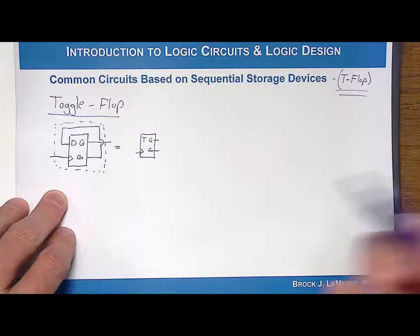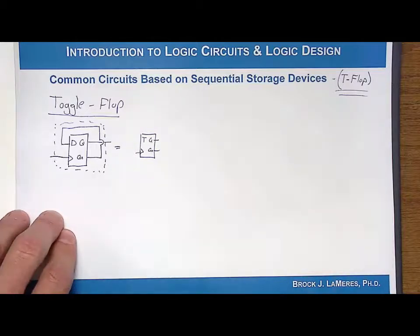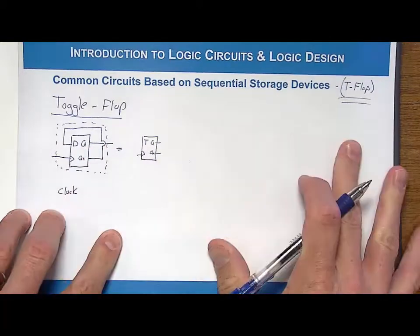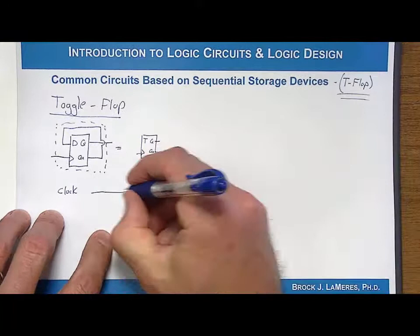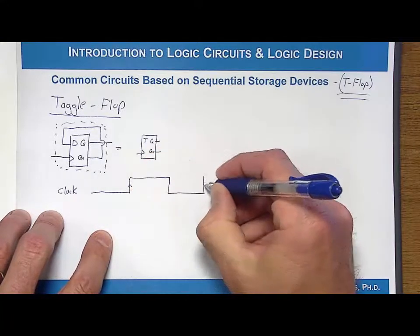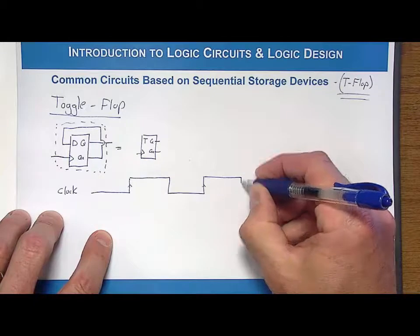So what does the behavior of this look like? Let's draw the timing diagram of this, and let's say that our clock came along. This is a rising edge triggered D flip-flop, so let's do two or three clock edges here.